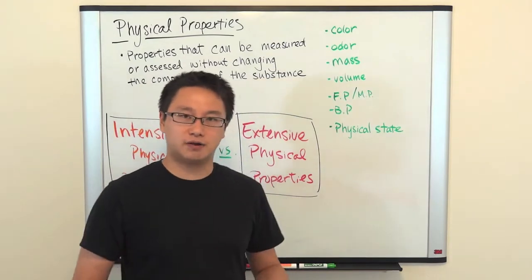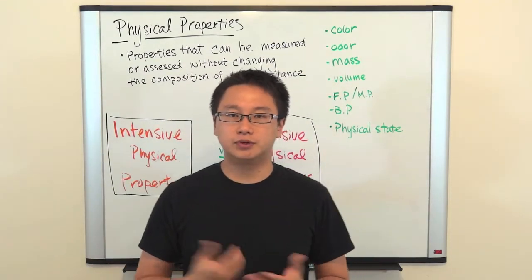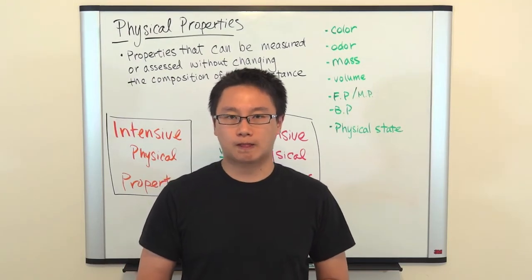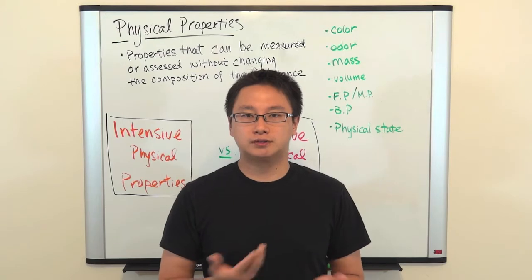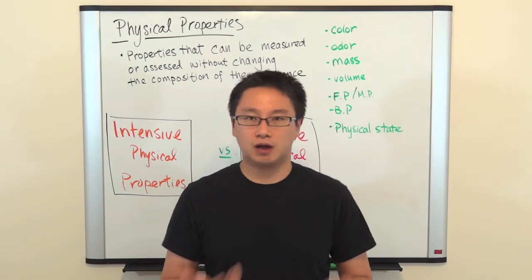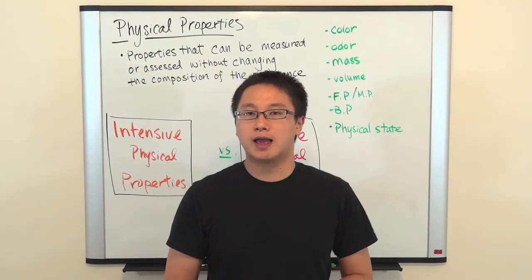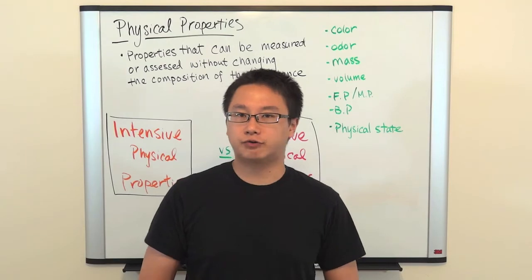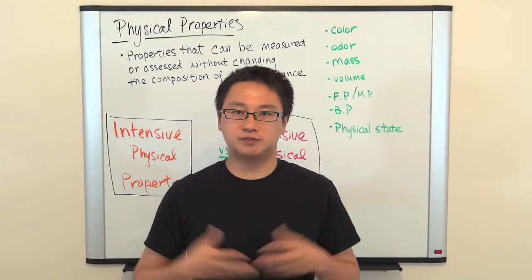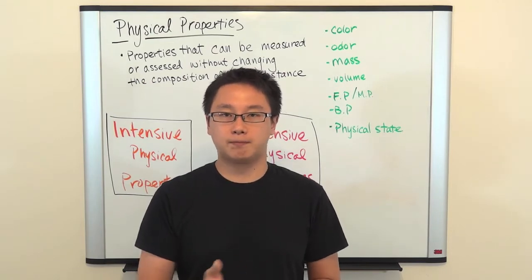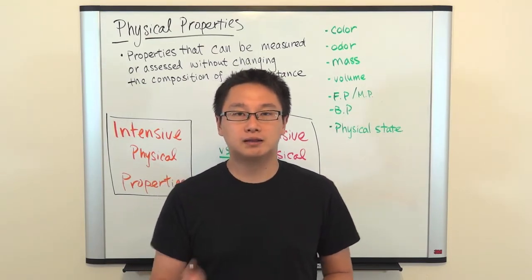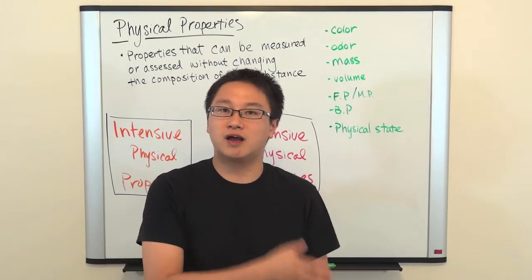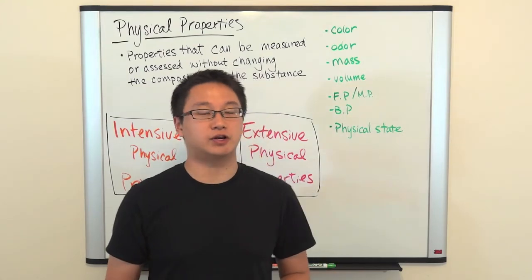When we talk about mass and volume, let's use an example to illustrate. If you have 100 milliliters of water, its volume is going to be 100 milliliters. And if you measure the mass on a balance or a scale, it's going to turn out to be 100 grams. These two numbers are the same because the density of water is 1 gram per milliliter, meaning that for each milliliter of water, it's going to have a mass of 1 gram.